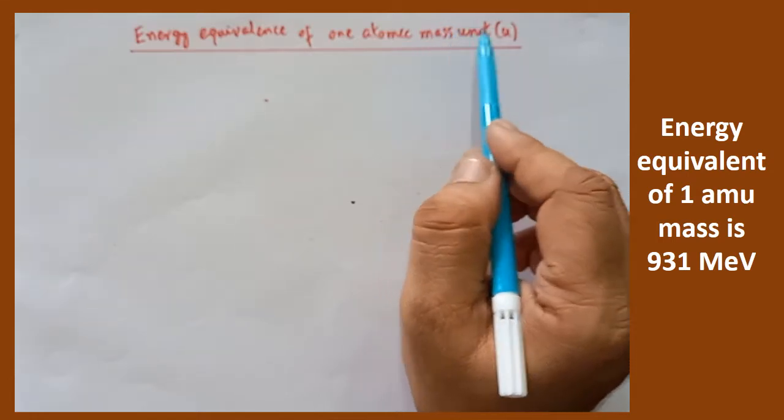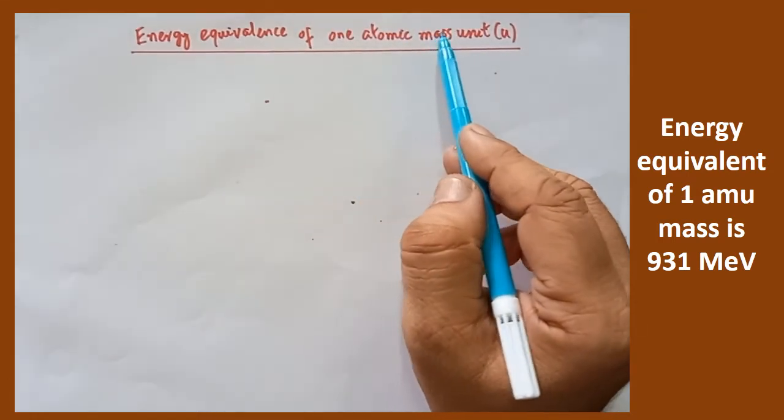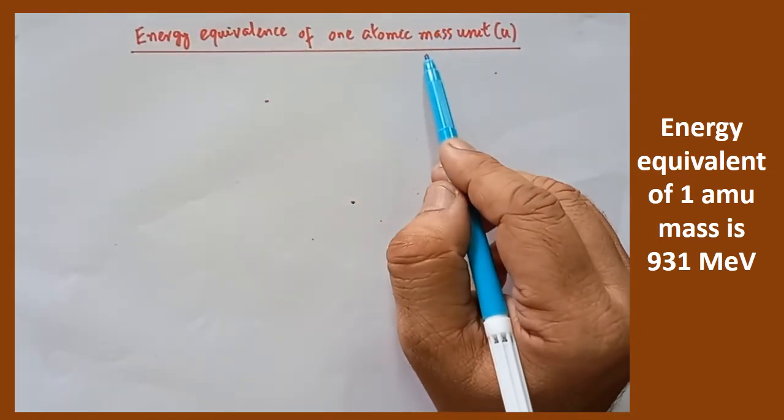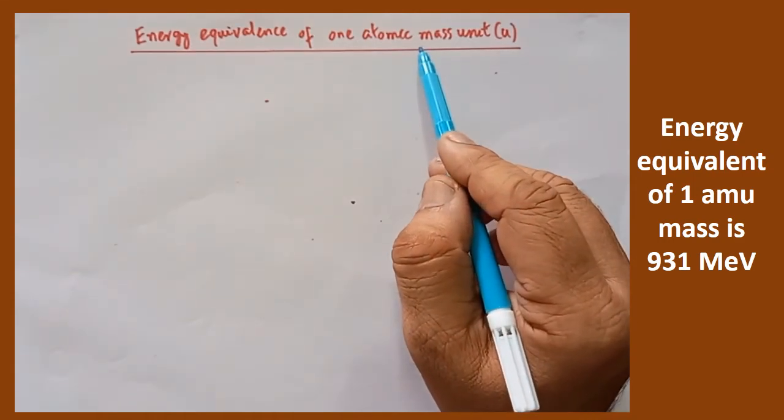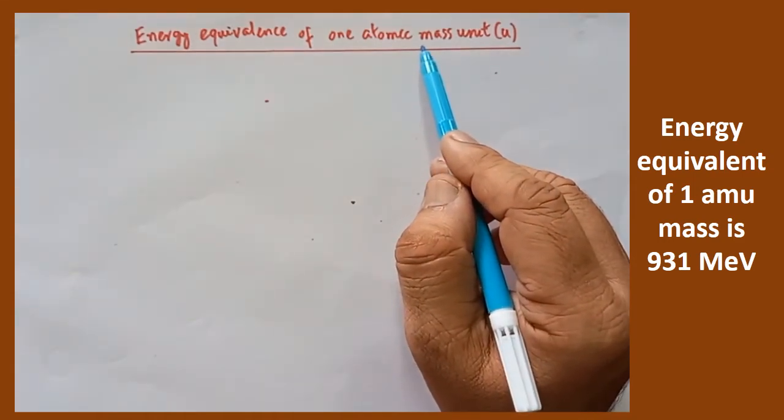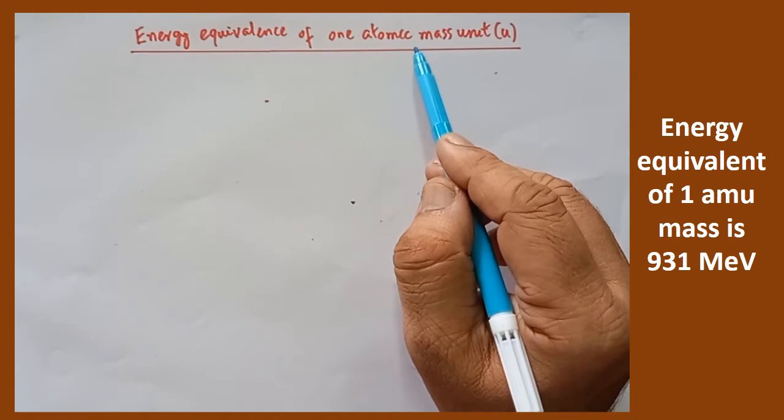First you should know what is atomic mass unit, that is one of the smallest units, with the help of this we are able to measure the mass of the protons, neutrons and other subatomic particles.